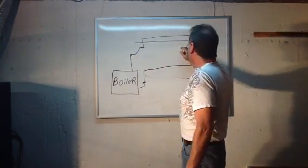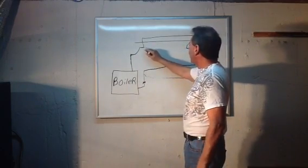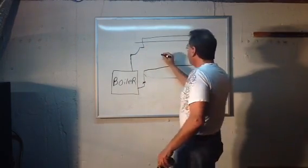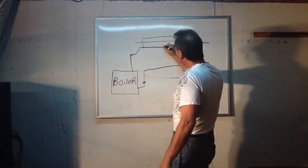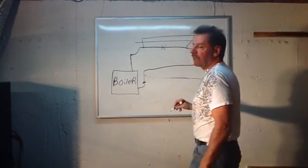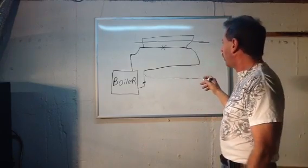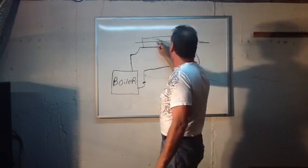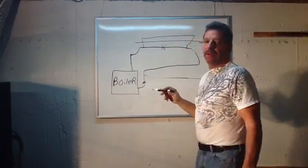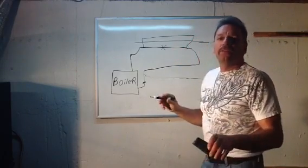That would be how you would get the baseboard to get hot again, by either cutting those tees out. Or if they did do it on monoflow tees and you're not sure what's going on, you can simply cut a valve right there in the basement in the middle of the pipe and shut it off. That would cause the water to stop at the valve and go through and around, and you'd see that the baseboard would get hot instantly.